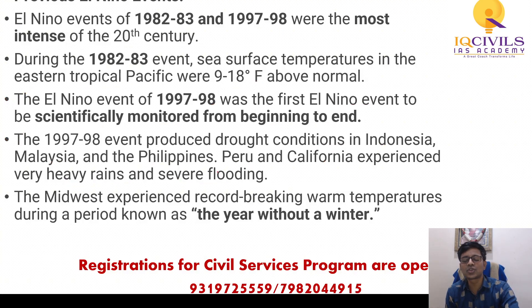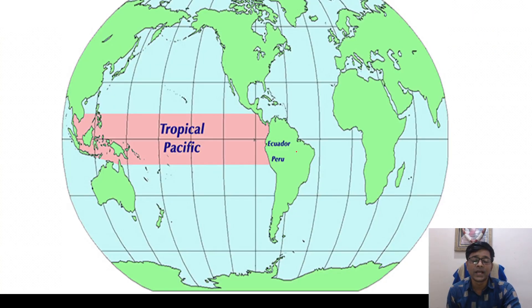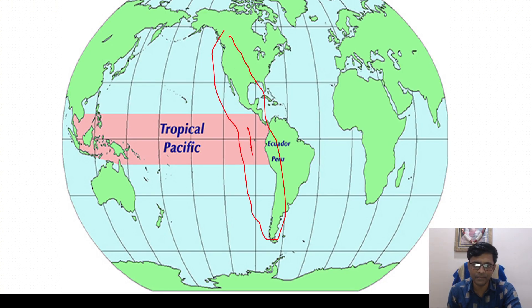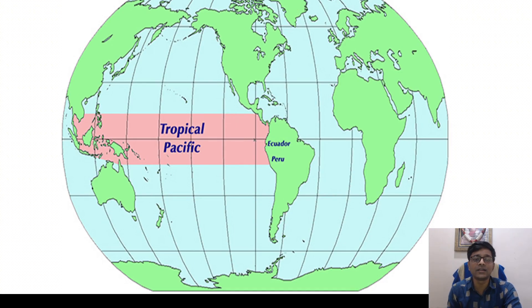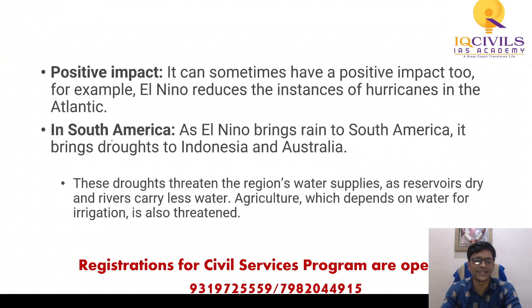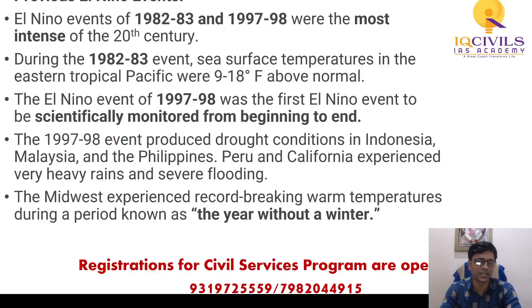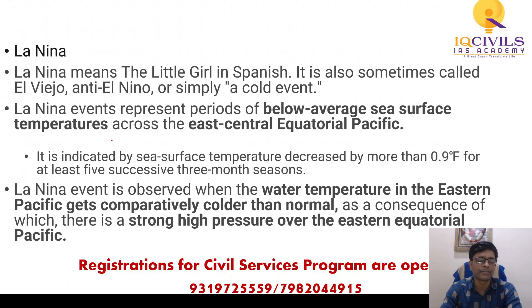In simple terms: if there is El Niño, there is more rain in North and South America and less rain in Australia and Indonesia. It is that straightforward.